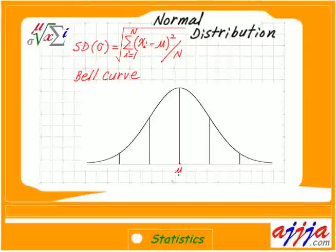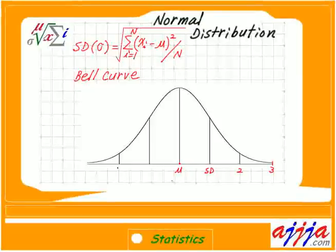Right in the middle, that's the average — which is the mu value, the mean value. Then on the right-hand side, we have one standard deviation, two SD, three SD, and so on. On the left-hand side, negative one SD, negative two, and negative three, and so on.